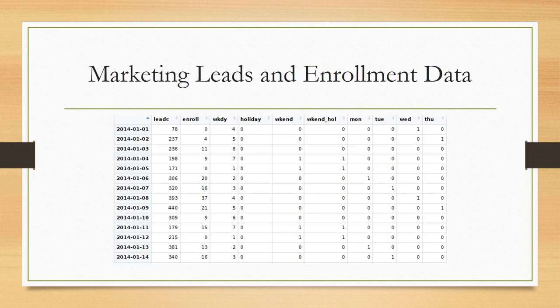The data consists of marketing leads and enrollment data from a variety of different schools, programs, and locations. The data is originally at the daily level and includes leads and enrollment information. Based on the date stamp, we can also derive the weekday, whether it's a holiday, a weekend, and the day of the week. This supplemental data can be useful in regression analysis to accompany the ARIMA analysis.